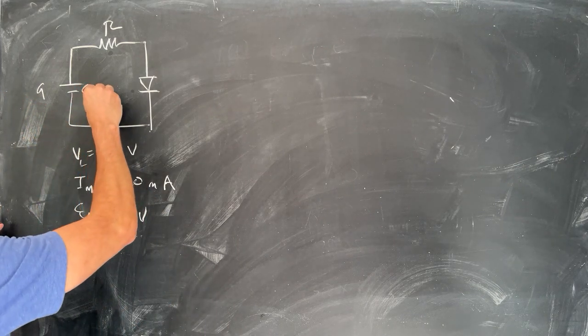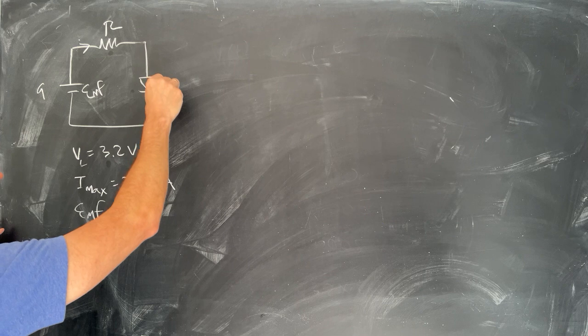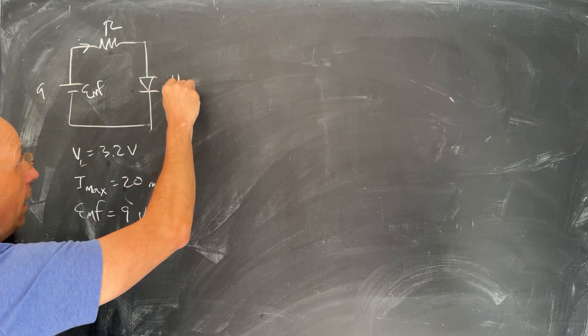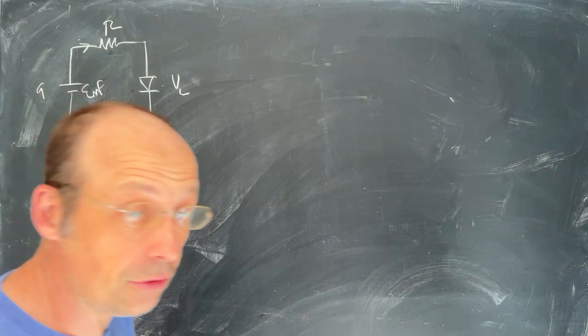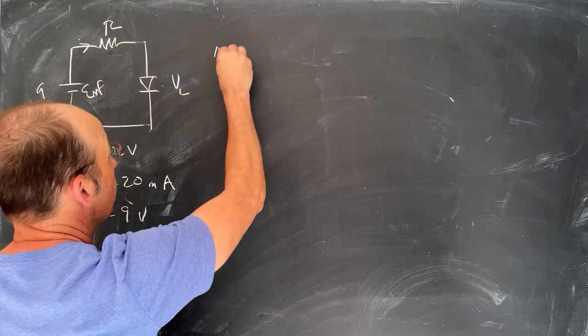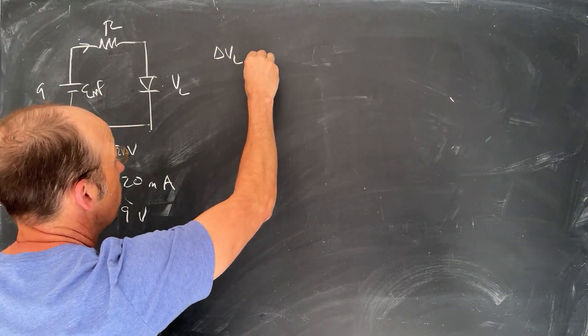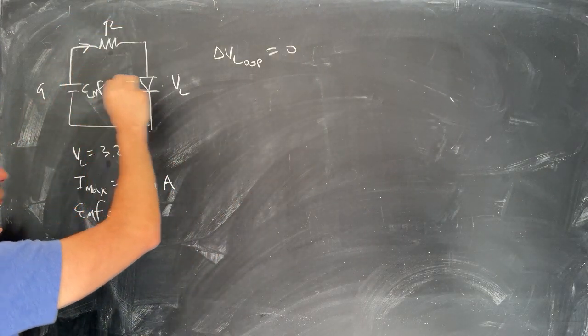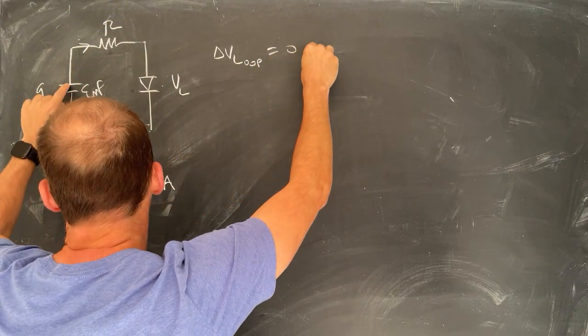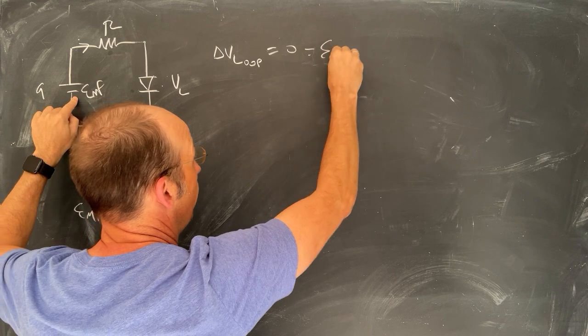So what value of the resistor would we have? Let's just call this EMF. Let's do this generic, and that's R. And this is going to be VL, the voltage across the LED. So now I can still use the loop rule. So the loop rule says the change in voltage around a loop is equal to zero. If I go around this way, I'm going to get a voltage drop of EMF. It's a positive.